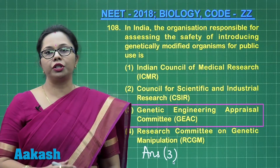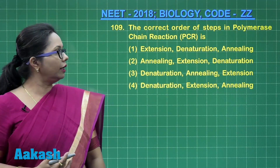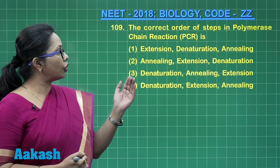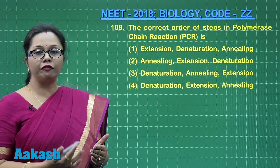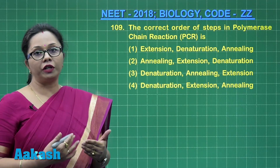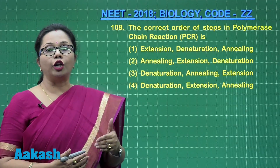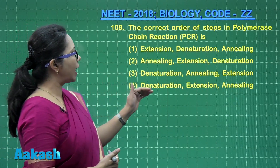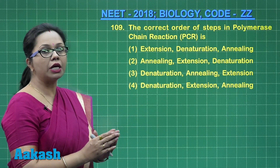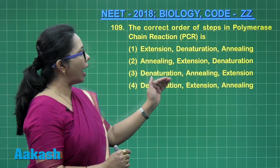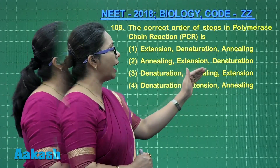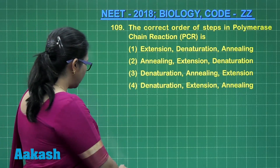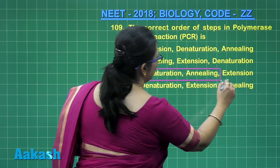Now let us take up question number 109: the correct order of steps in polymerase chain reaction. PCR is a method to make several copies of a DNA of interest — it is an in vitro method of cloning DNA. PCR runs in cycles and each cycle has three steps: denaturation, where the two strands of DNA are separated; then a primer anneals to each strand; and those primers are then extended to form the entire length of the target. So here our correct answer is option 3.